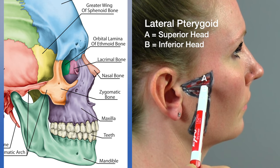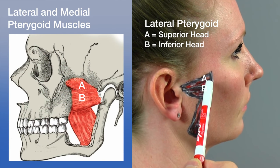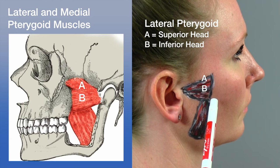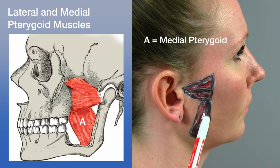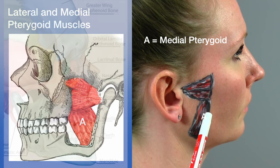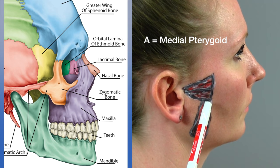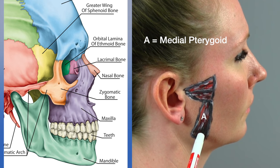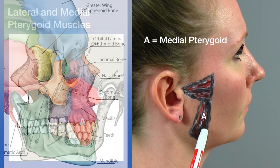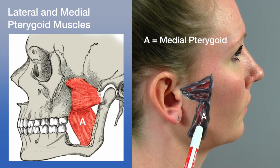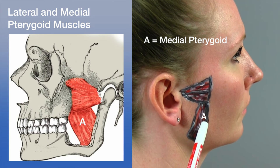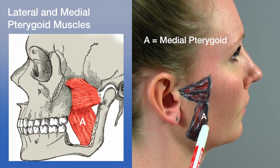The actions of the lateral pterygoid are that it protracts and contralaterally deviates the mandible at the temporomandibular joint. Below this, we see the medial pterygoid. The attachments of the medial pterygoid are from the sphenoid and maxillary bones to the internal surface of the mandible, at the angle of the mandible and inferior aspect of the ramus. The actions of the medial pterygoid are that it elevates, protracts, and contralaterally deviates the mandible at the temporomandibular joints.